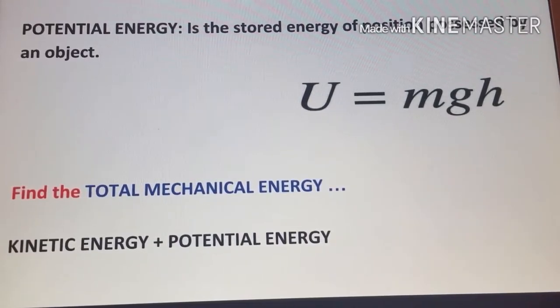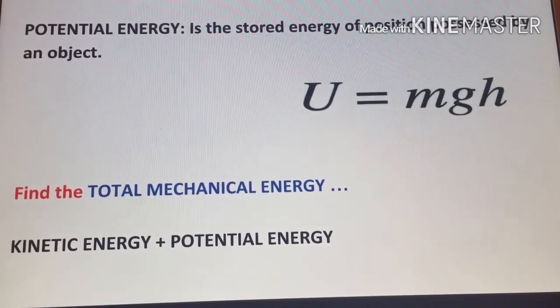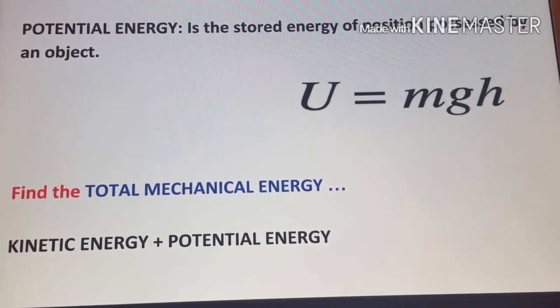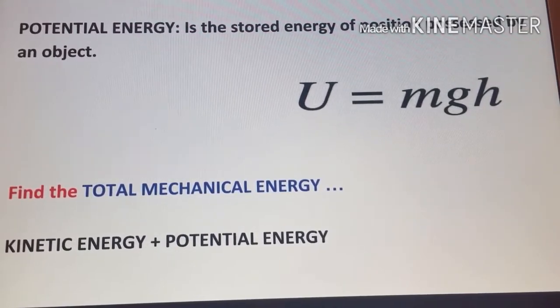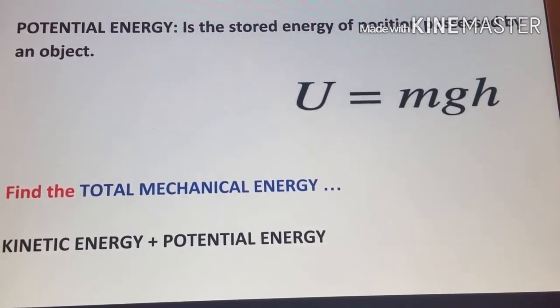Another vocabulary word we need, potential energy. It is the energy stored at a position possessed by an object. The M in the formula represents the mass, the G represents gravity, and the H represents the height.